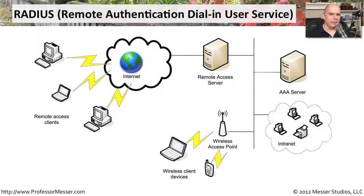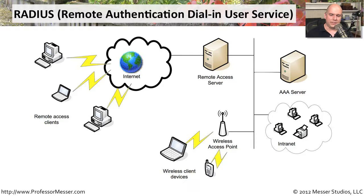One common way to do this is to use a protocol called RADIUS, which stands for Remote Authentication Dial-In User Service. That term dial-in is right there in the name, so it's already a very old protocol. It goes back to RFC 2058, and the current RFC for RADIUS is RFC 2865. This uses UDP and port 1812 by default, and it can be used for many different resources, such as dialing in from a remote access server.